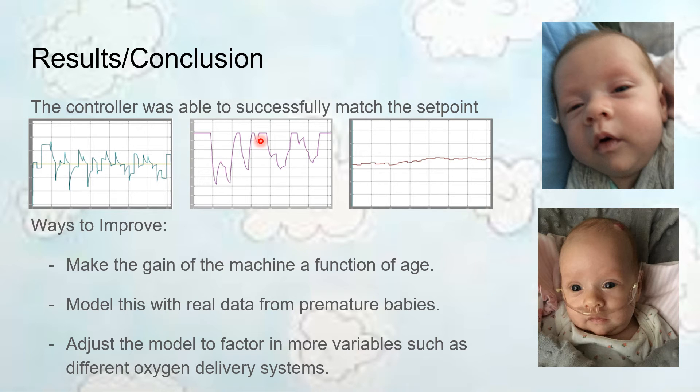Some ways that we could try to improve this is making the gain of the machine a function of age, because as babies age, just as Hans' babies now, one of them is off oxygen while the other is still on. As they get older, their ability to absorb oxygen increases, so they don't need as much help.